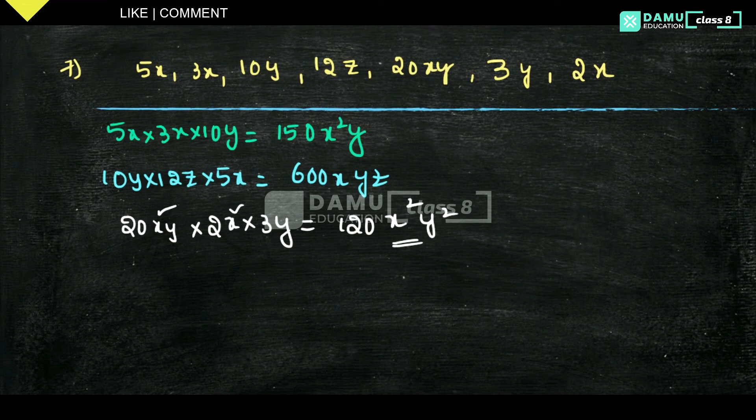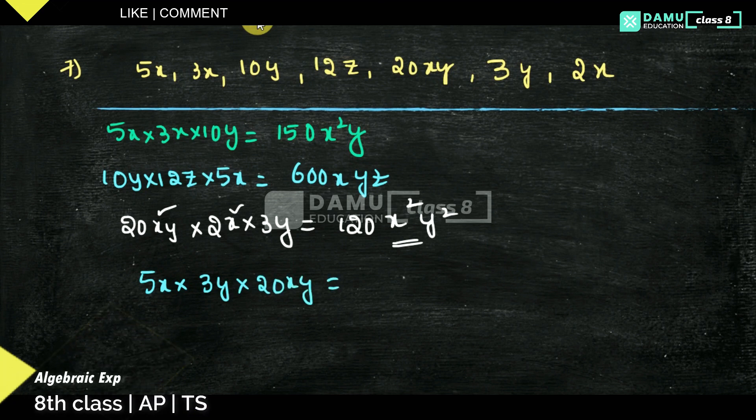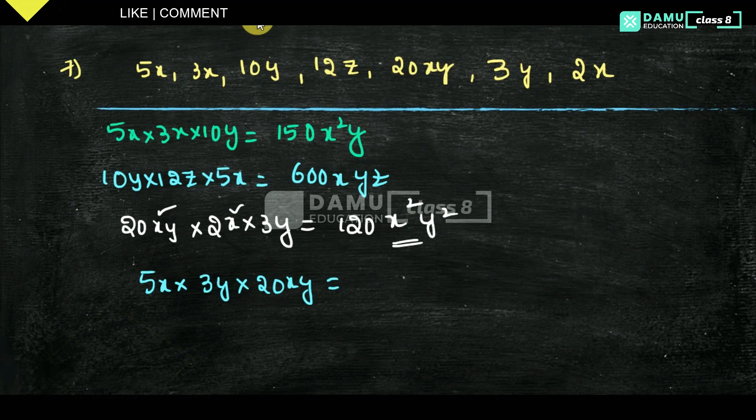Let us take another one. Another expression is 5x into 3y into 20xy. What is that here? 5 times 3 is 15, so 15 into 20. 15 into 20 is 300. X how many times? X squared. Y how many times? Y squared.